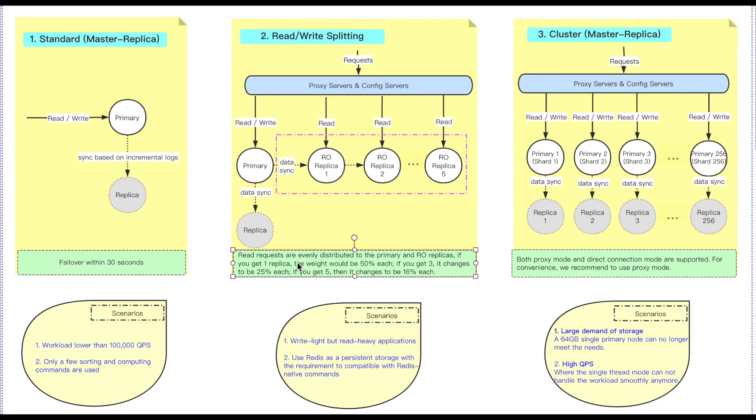So for read-write-splitting architecture, what is the best scenario to choose it? And what is actually used for? Well, as it contains only one primary node but several RO instances. So it's definitely suitable for write-light but read-heavy applications.